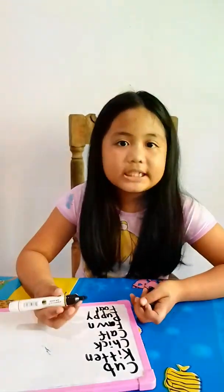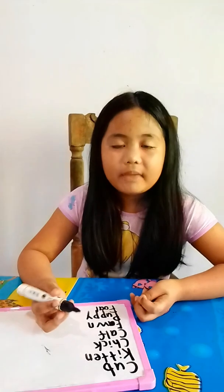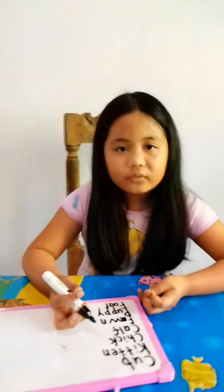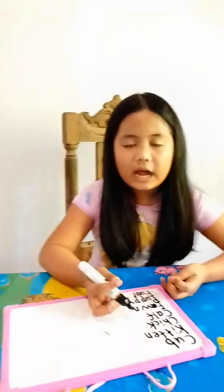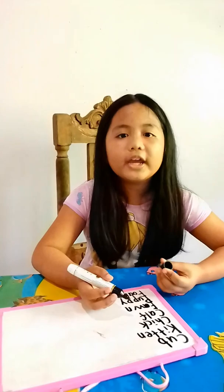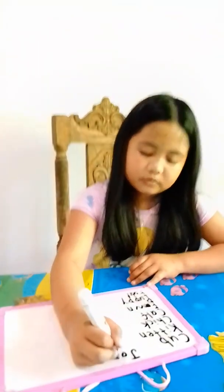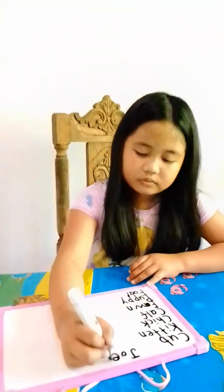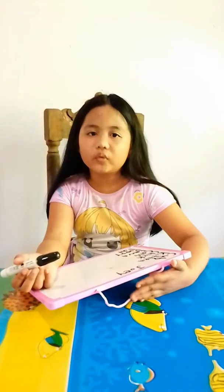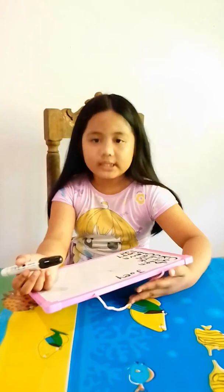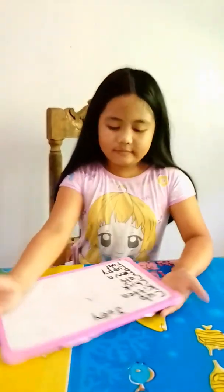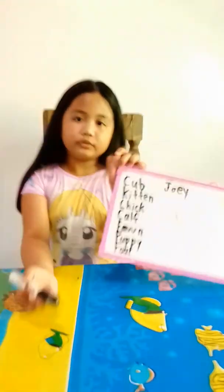What is the baby of a kangaroo? The baby of a kangaroo is a joey. The spelling is J-O-E-Y. Joey.